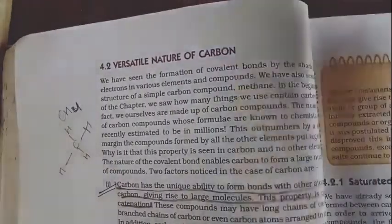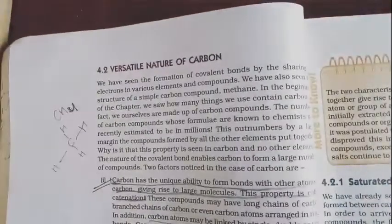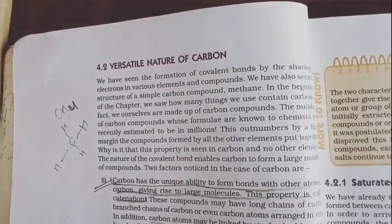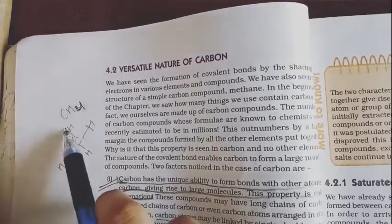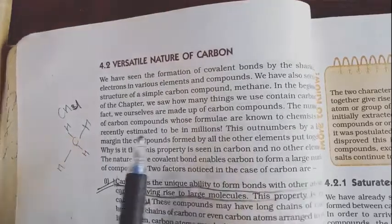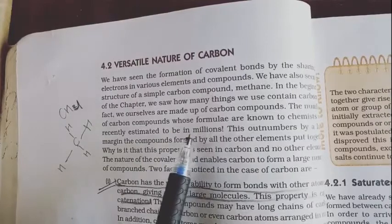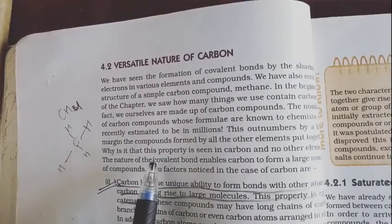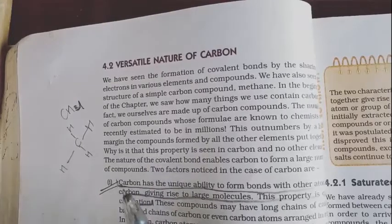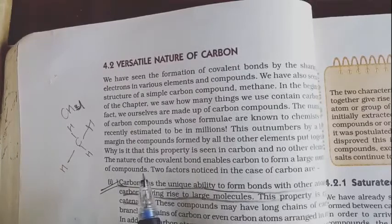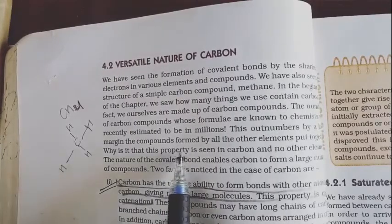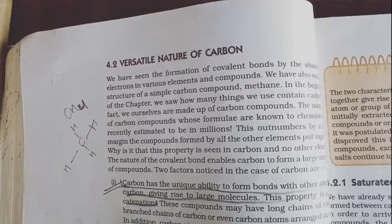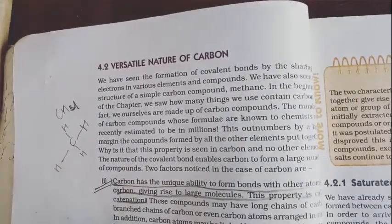So let's start. In the last video we studied that covalent bonds involve sharing of electrons between elements and compounds. The simplest structure we saw was methane, CH4, which is a carbon compound. We discussed how covalent bonds are used and how carbon compounds are formed. Recently, more than 2 million compounds have been created, and there are many more formulas that can be generated.